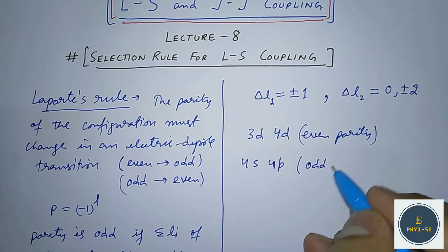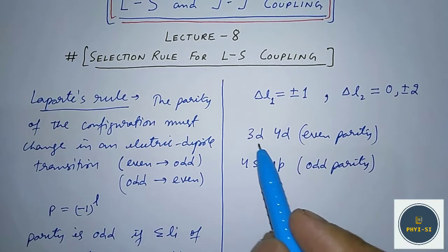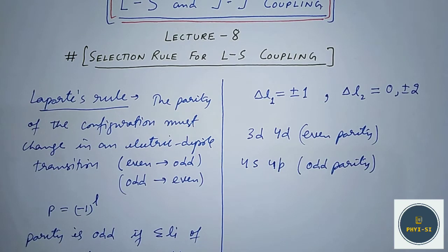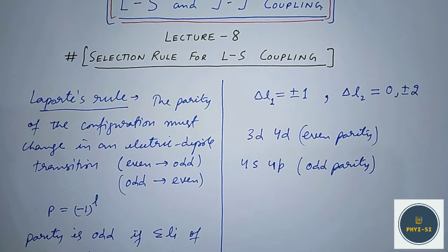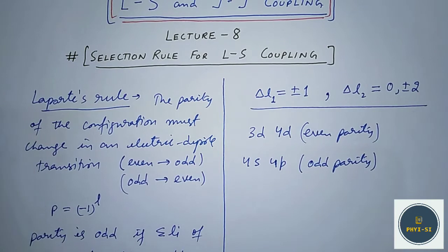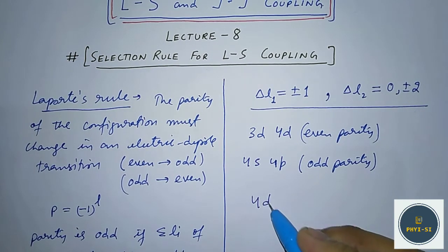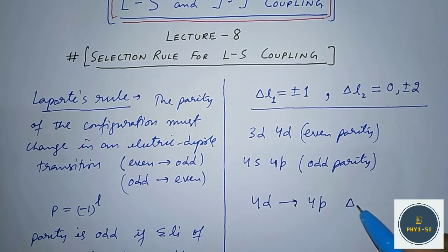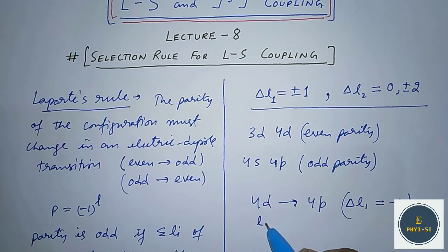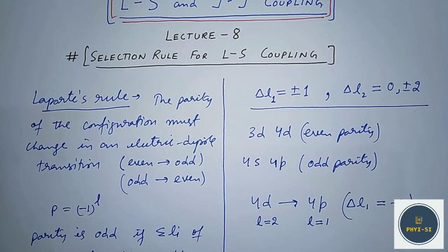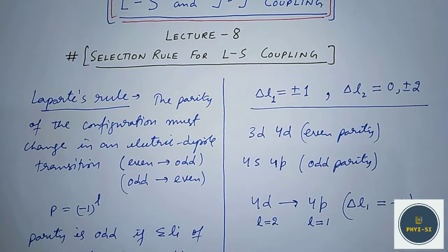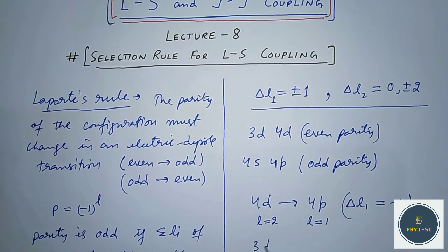If there is a transition between these levels, we can see that the parity changes, so it follows Laporte's rule. For example, 4d may go to 4p: here ΔL₁ = −1 (since for d, L = 2, and for p, L = 1). And if 3d goes to 4s, the change in L for that electron is ΔL = −2.